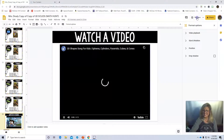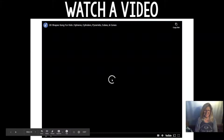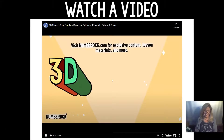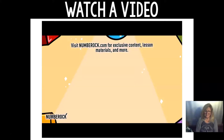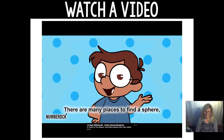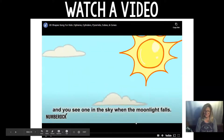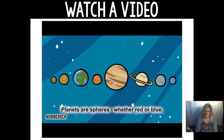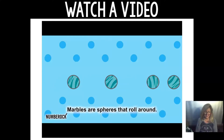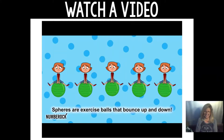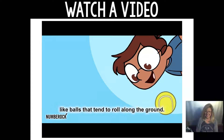Sphere, cylinder, pyramid, cube, cone — they're all 3D shapes. There are many places to find a sphere, like if a tennis ball happens to roll near. You can shoot a sphere, play a basketball, and you'll see one in the sky when the moonlight falls. Plants are spheres; the bearings in machines are tiny spheres too. Marbles are spheres that roll around. Spheres are exercise balls that bounce up and down. Spheres are shapes that are perfectly round, like balls that tend to roll along the ground.